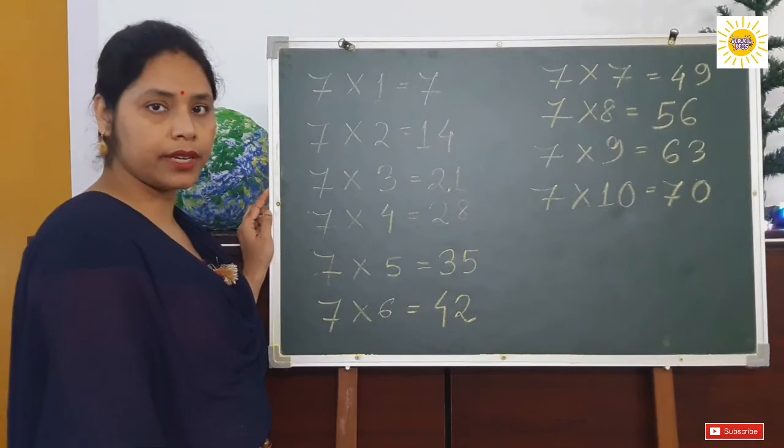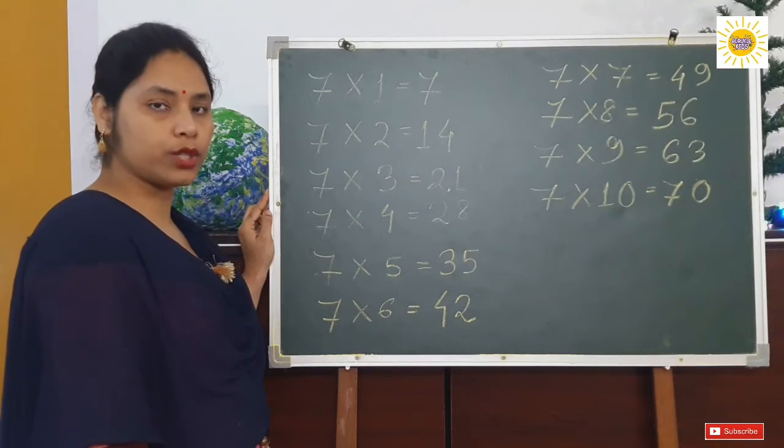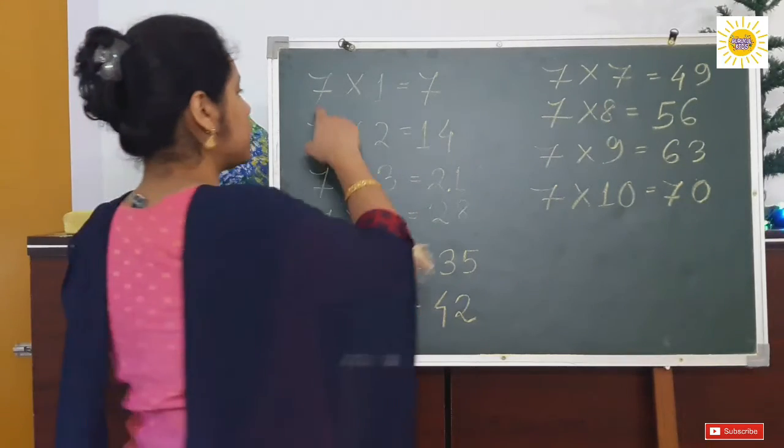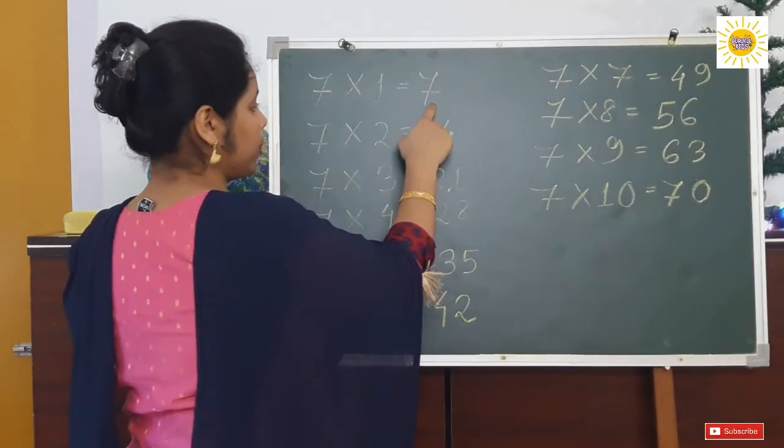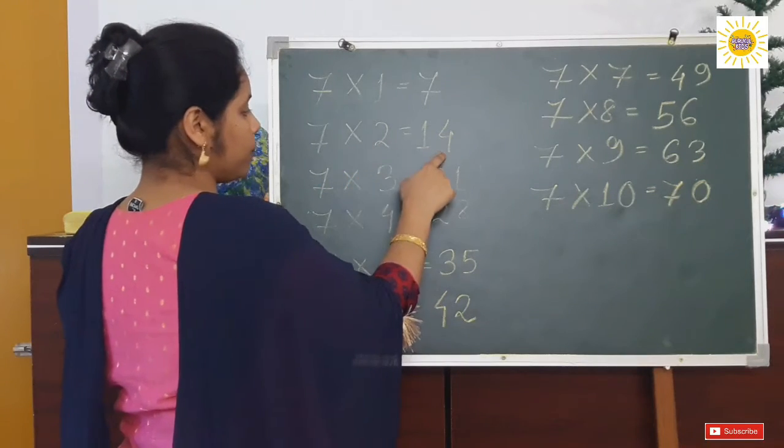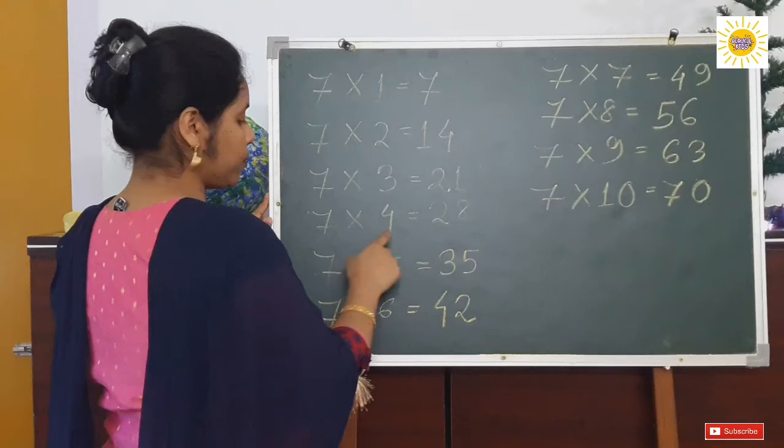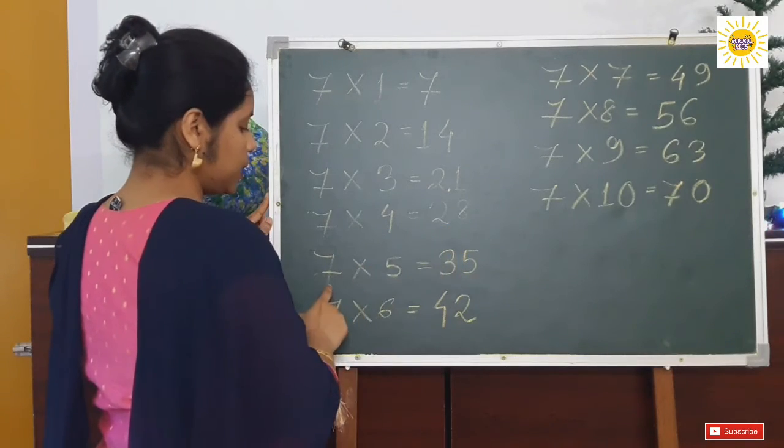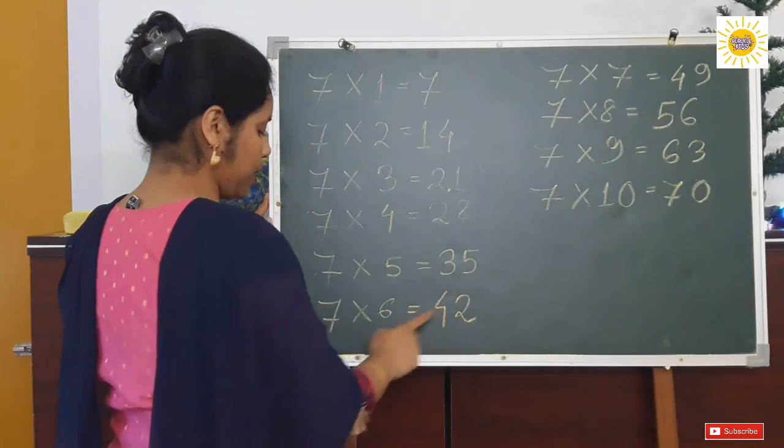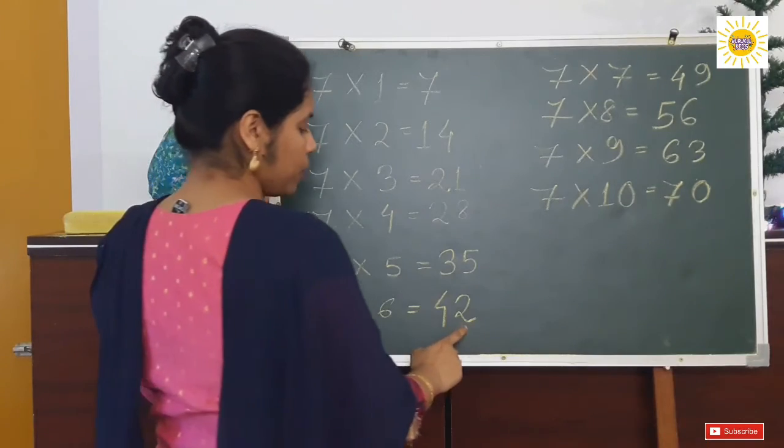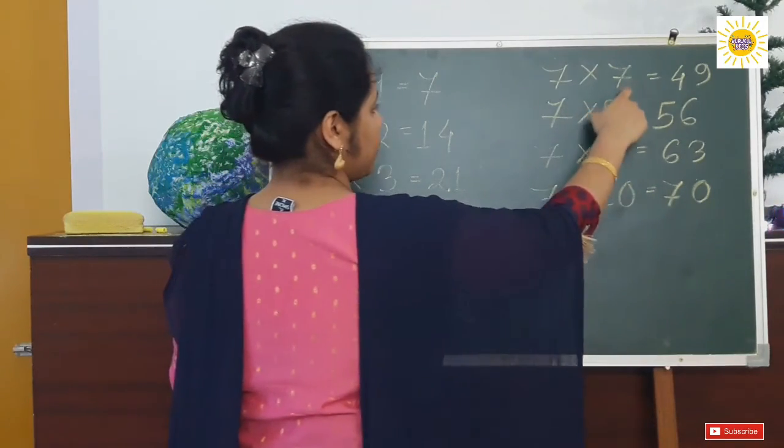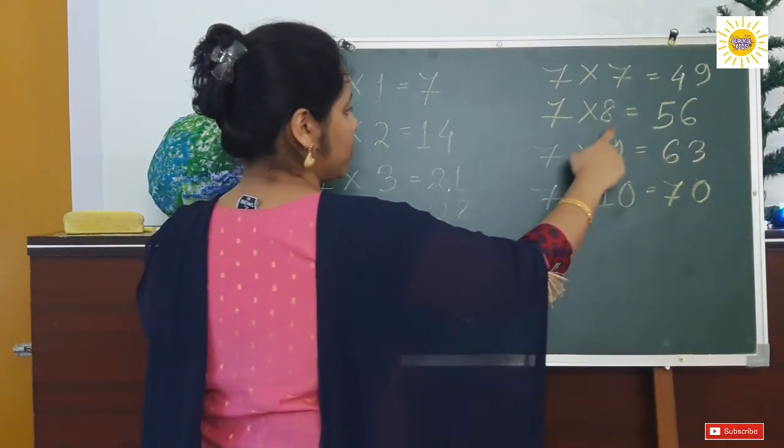Have you learned it? Let's start once more time. Okay. 7 ones are 7. 7 twos are 14. 7 threes are 21. 7 fours are 28. 7 fives are 35. 7 sixes are 42. 7 sevens are 49.